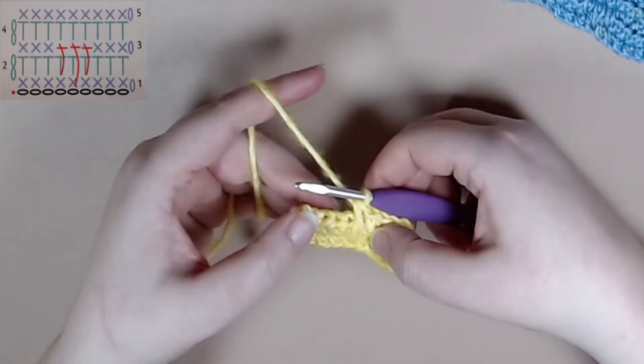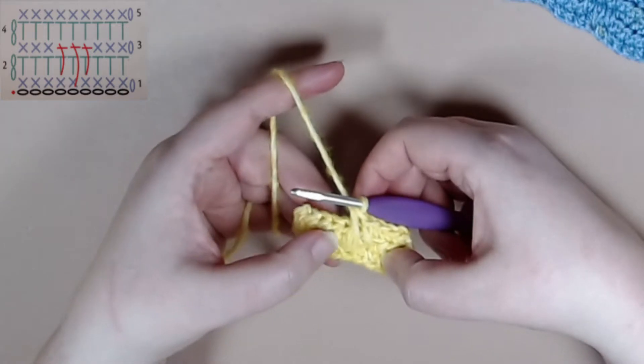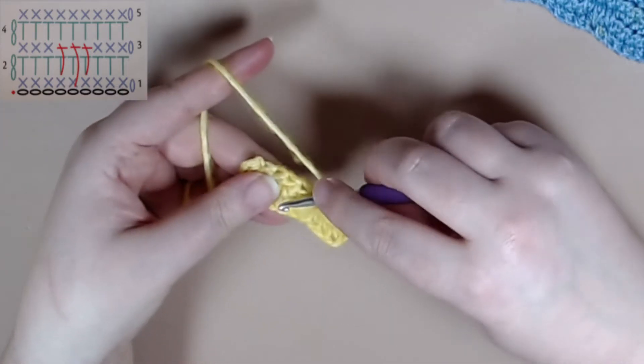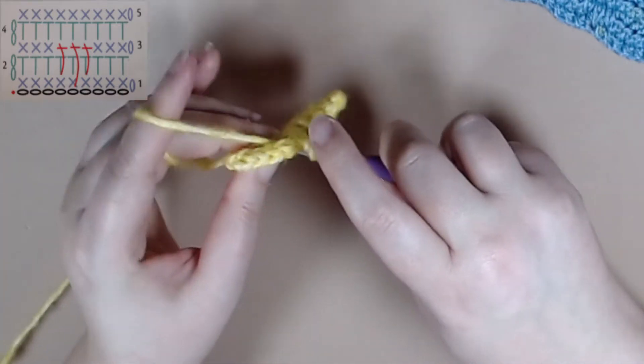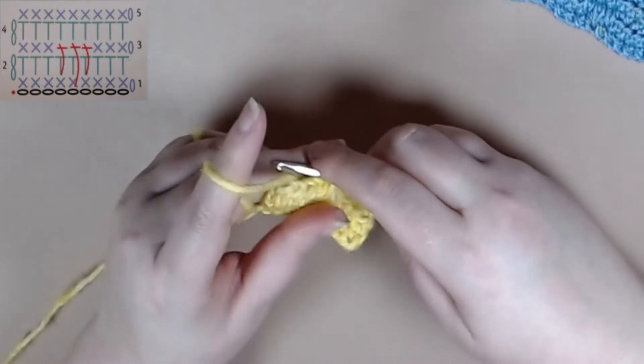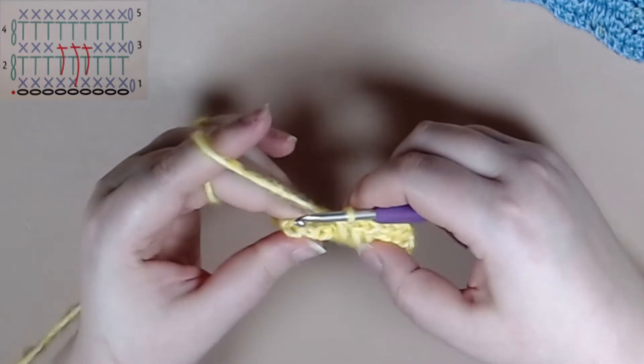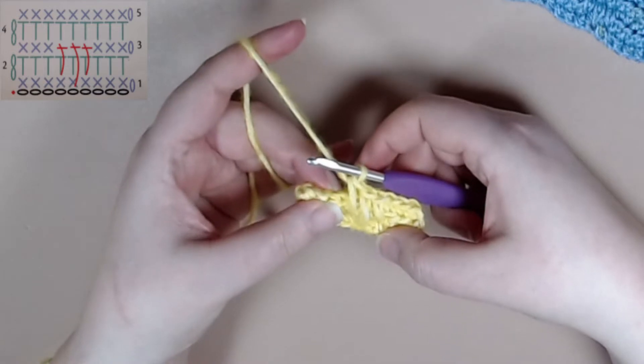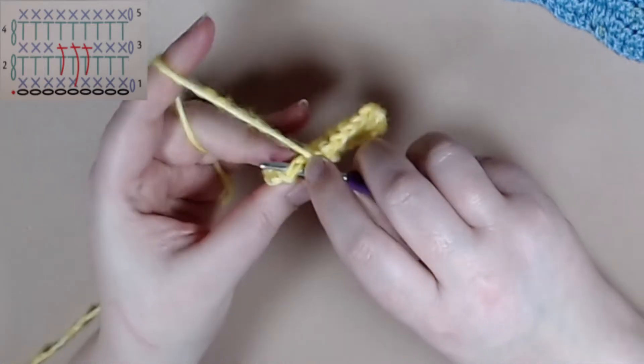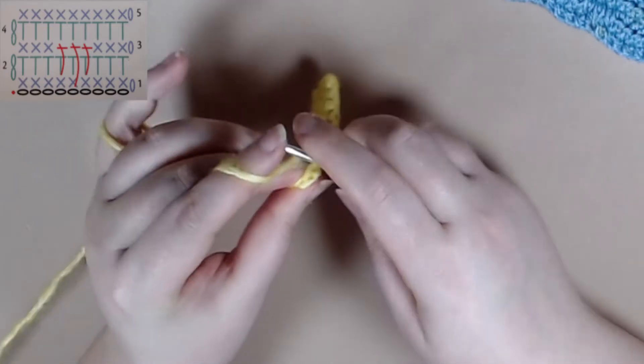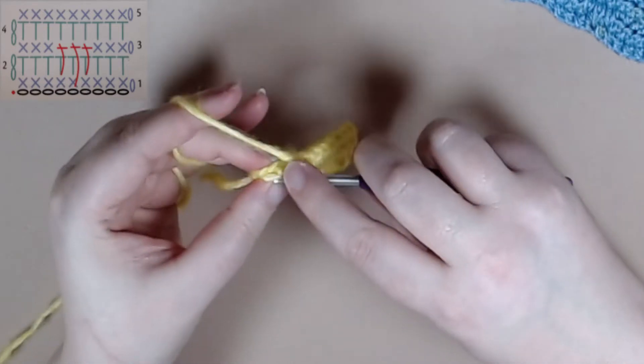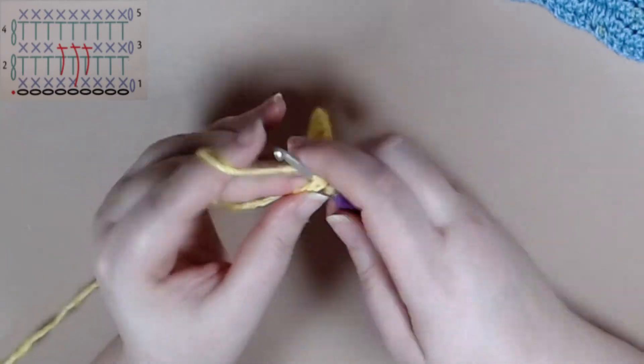Next we're just going to do one stitch below, locate where that's at, pull through, pull through and you'll see how it ended creating a level of design. Then we'll finish off by working three double crochets into the last stitches.